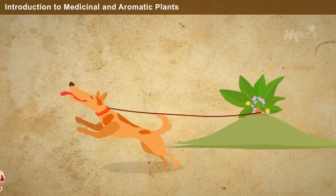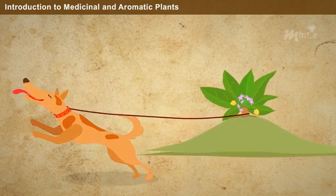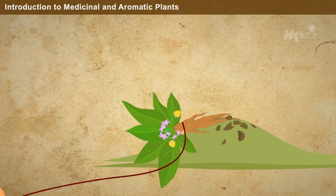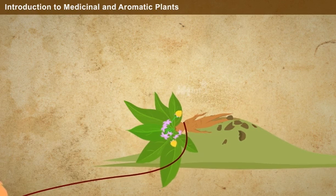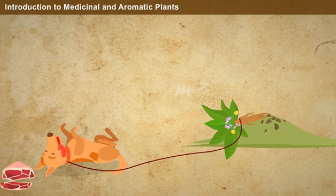When the dog runs towards the meat, the tugged plant uproots by the pull of the dog. However, the poor dog gets killed by the scream.